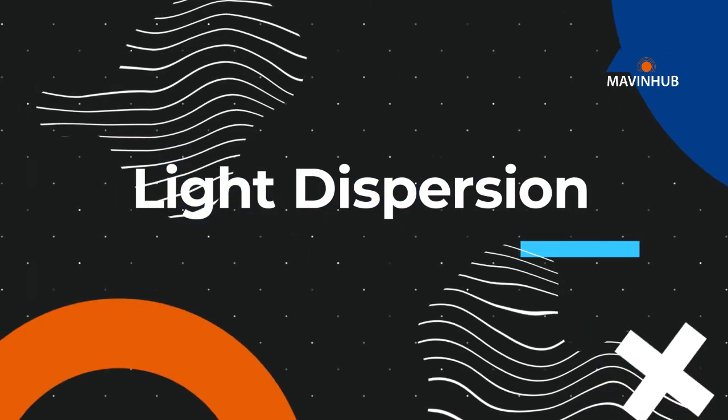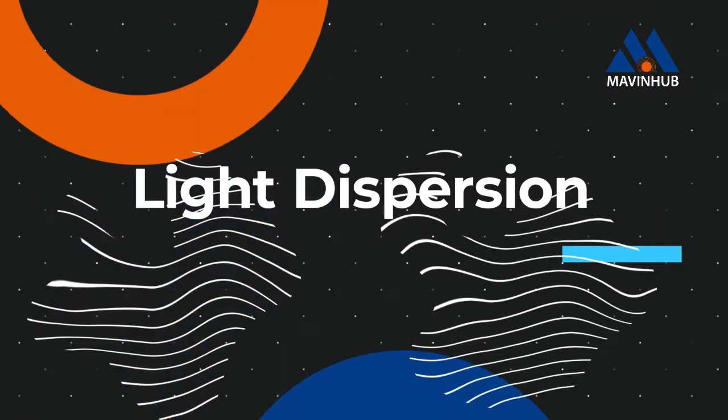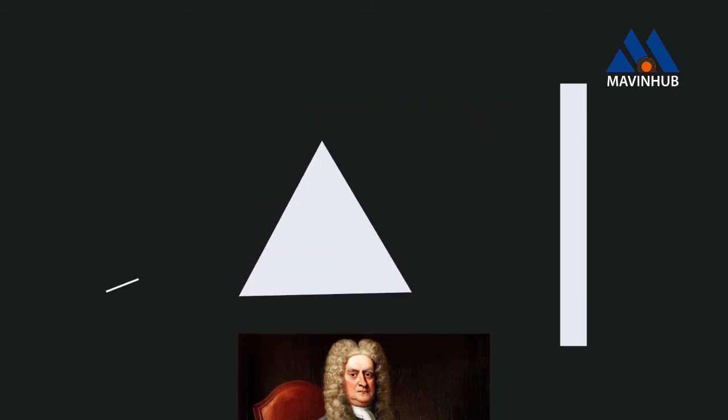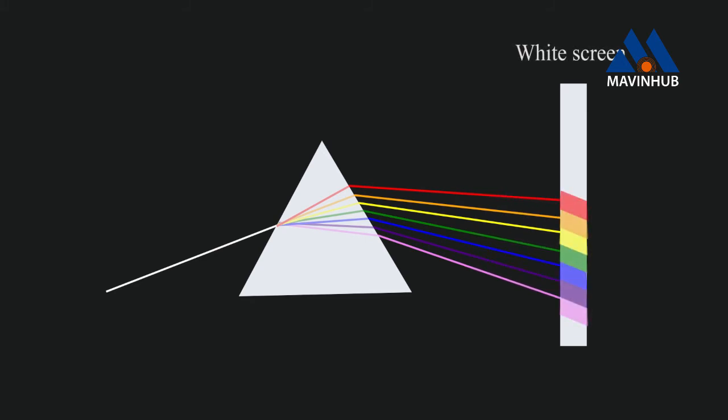Another interesting phenomenon that occurs in glass prism is the dispersion of light. In 1665, Isaac Newton discovered that white light consists of seven colors. He found that if a beam of white light is passed through a glass prism, then it will split into seven colors.